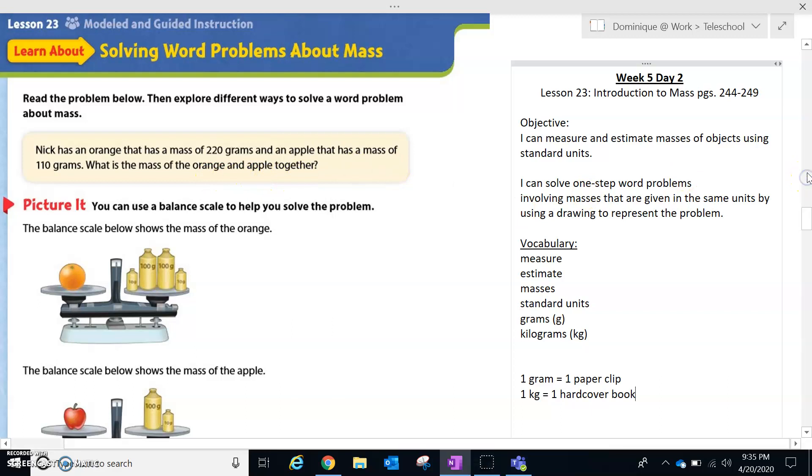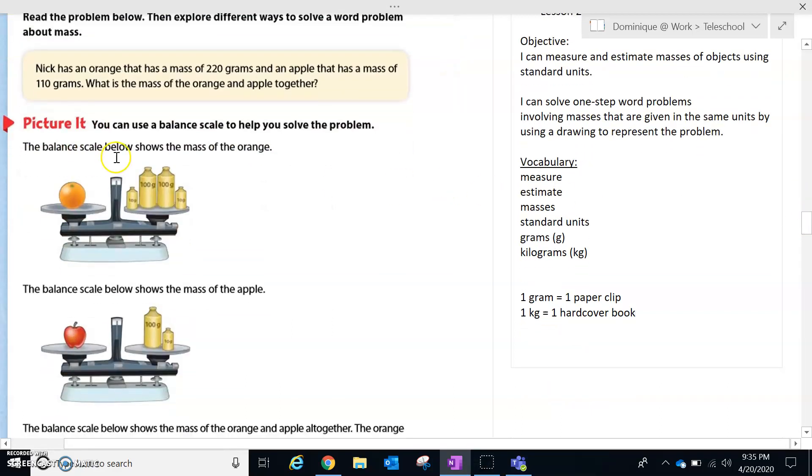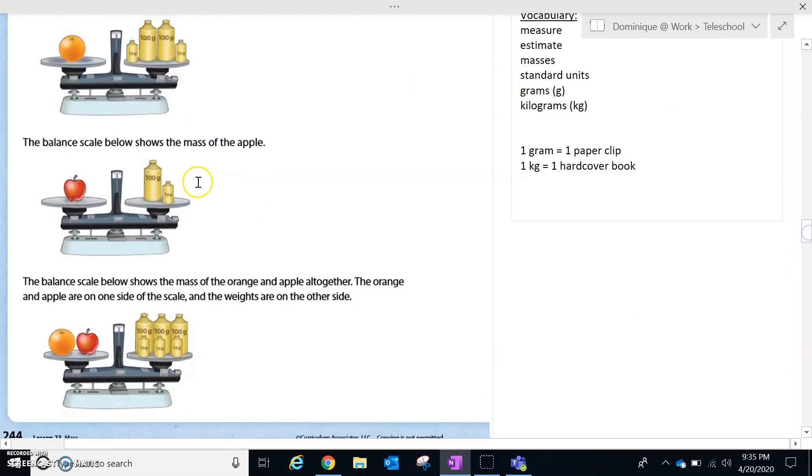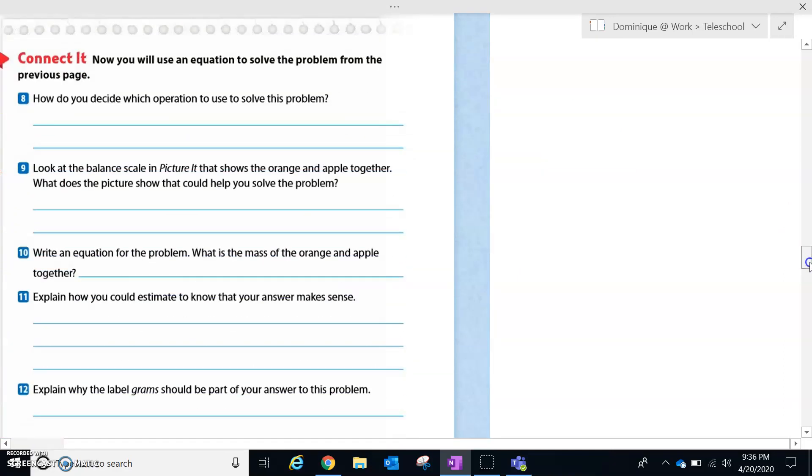It says you can use a balanced scale to help you solve the problem. The balanced scale shows the mass of the orange. So if you see, we have 100 grams, 100 grams, so that's 200, and then you have two 10-gram weights, which altogether equals 220 grams. And then you have the balanced scale which shows the mass of the apple: 100 grams and 10 grams, altogether that equals 110 grams. The balanced scale shows the mass of the orange and apple together. The orange and apple are on one side of the scale, and the weights are on the other side.